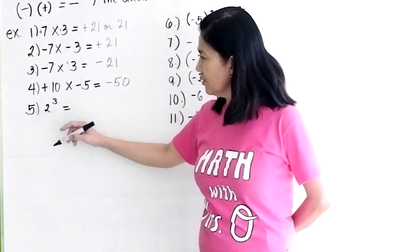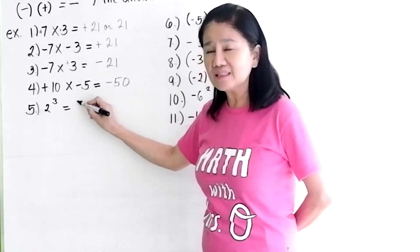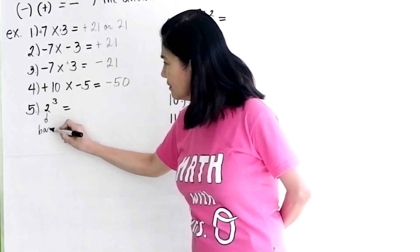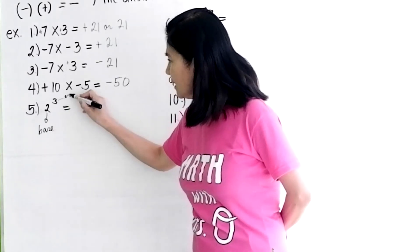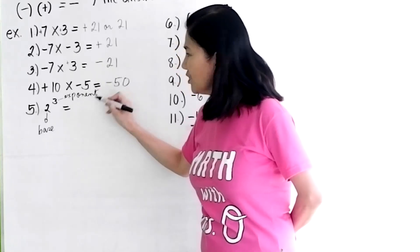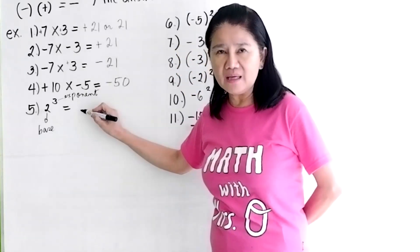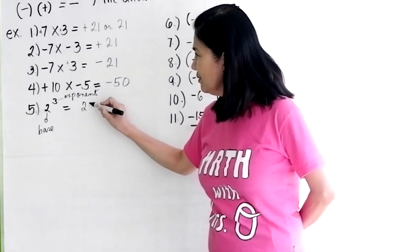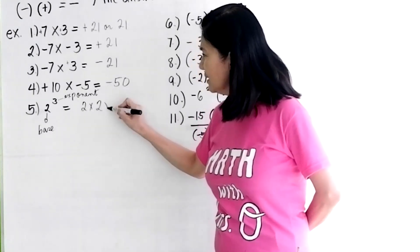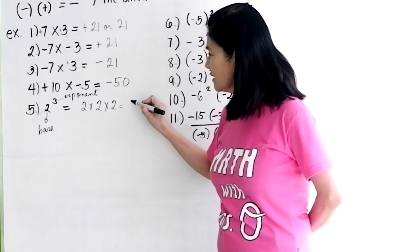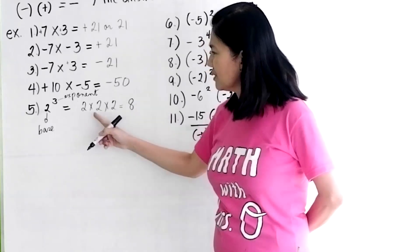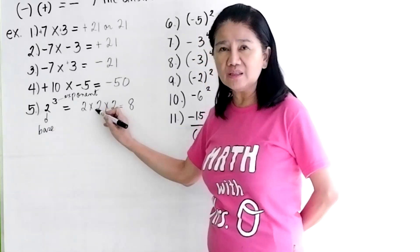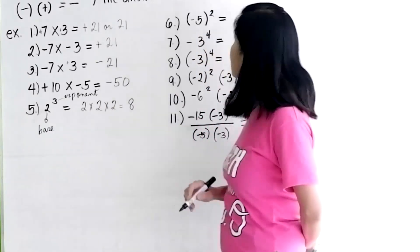Number 5: 2 cubed. 2 is the base and 3 is the exponent. This means you multiply the base 2, three times: 2 times 2 times 2 is 8. 2 times 2 is 4, times 2 is 8. Positive times positive is positive 8.